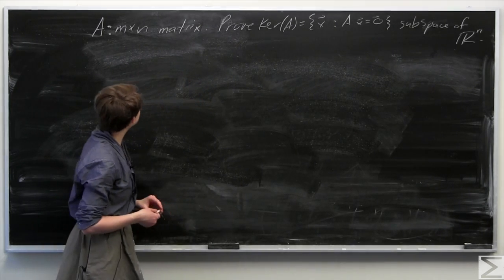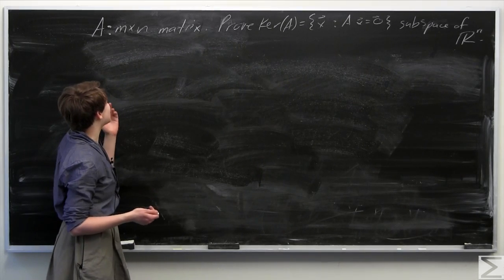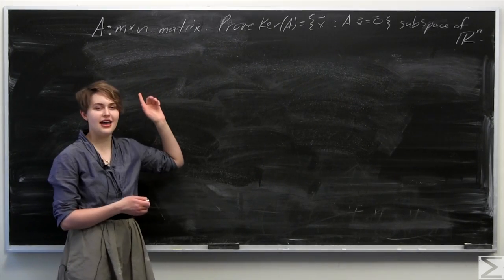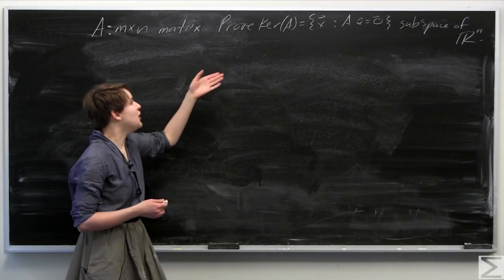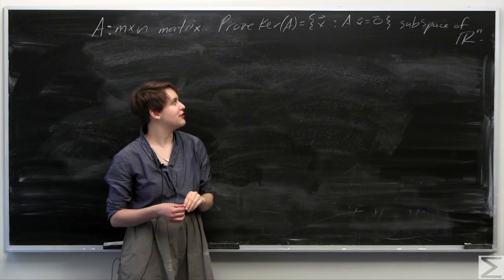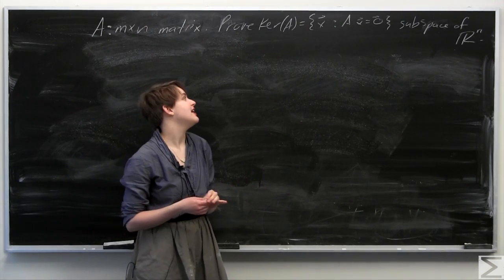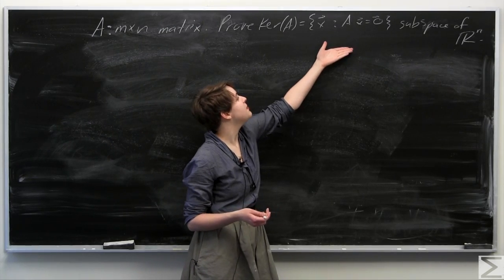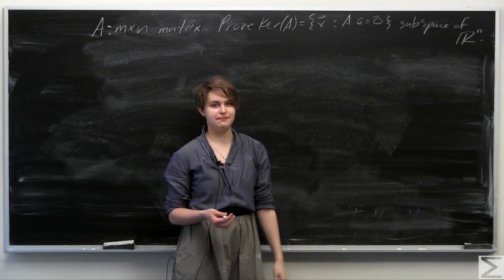This week's Advanced Knowledge Problem of the Week was asking you to prove that given some A, which is an m by n matrix, the kernel of A — also known as the null space of A, given by this set here — is a subspace of Rn.